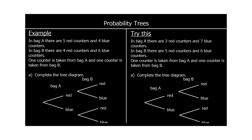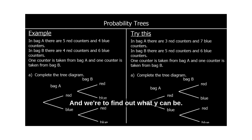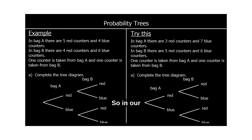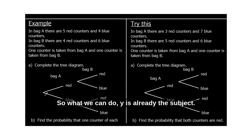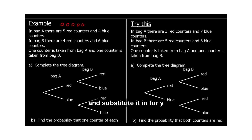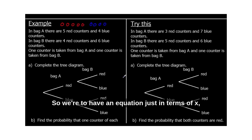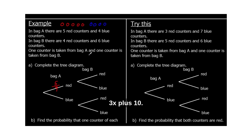In bag A, there are five red counters and four blue counters. So for the first pick from bag A, what's the probability of getting a red? The probability is five out of nine — five out of nine counters are red — and the probability of getting a blue is four ninths. Four out of nine are blue. So that's bag A.